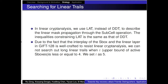For searching linear trails, we use the LAT instead of the DDT to describe linear mask propagation through the SubCell operation. The inequalities describing the constraints are the same as for the DDT. Due to the fact that the interplay of the S-boxes and linear layer in GIFT-128 is well-crafted to resist linear cryptanalysis, we cannot search out long linear trails when the active S-box threshold t is less than or equal to 4, so we set it to 5.